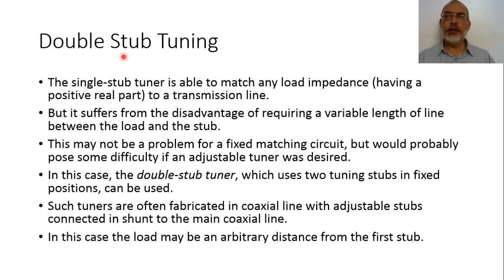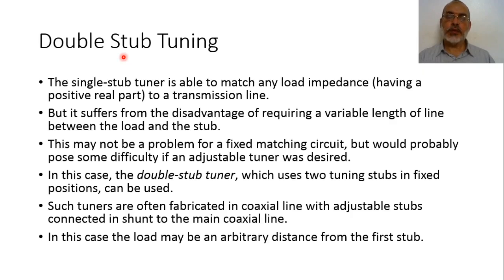In this case, the matching circuit would be composed of a fixed distance of transmission line connected to two variable stubs. By connecting the load to the fixed transmission line section and varying the two stubs, we can match the load. This is what is called double stub tuning.